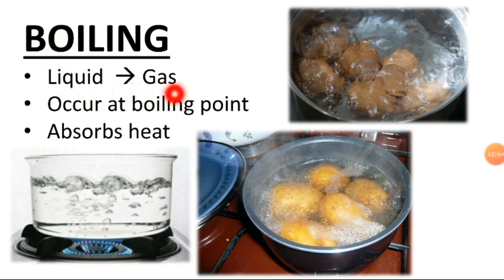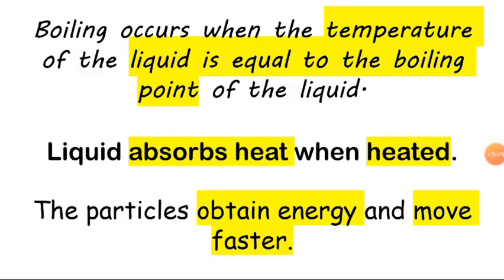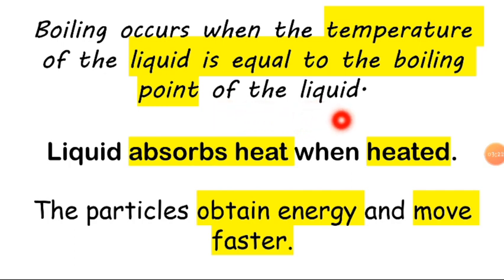Next is boiling — liquid changes to gas only at the boiling point, and this process absorbs heat. If the temperature of the liquid does not reach the boiling point, boiling will not happen. Boiling occurs when the temperature of the liquid equals the boiling point. For example, the boiling point of water is 100 degrees Celsius, so water will start boiling at 100 degrees Celsius.